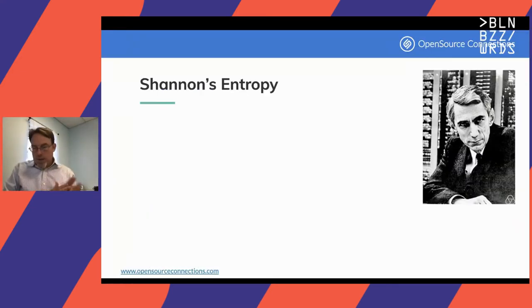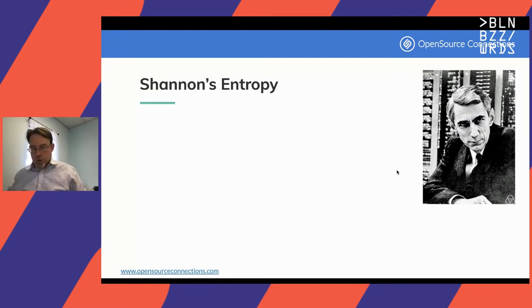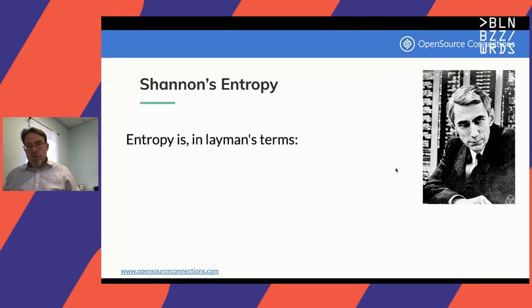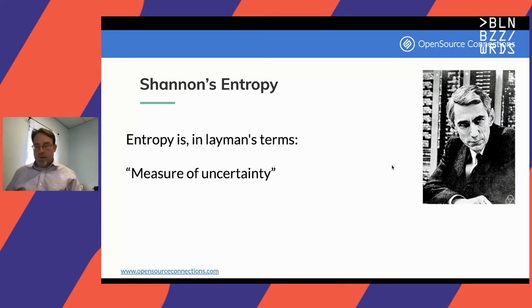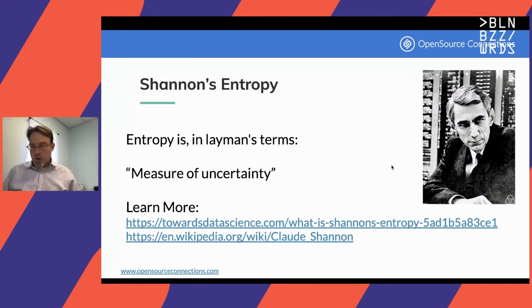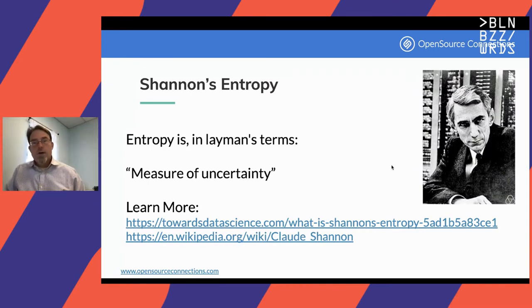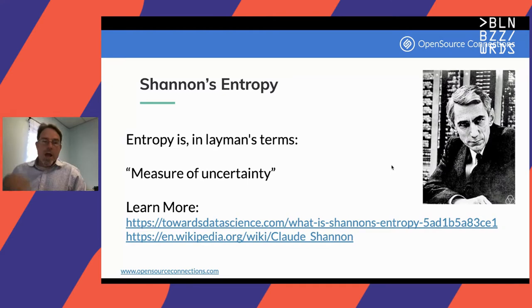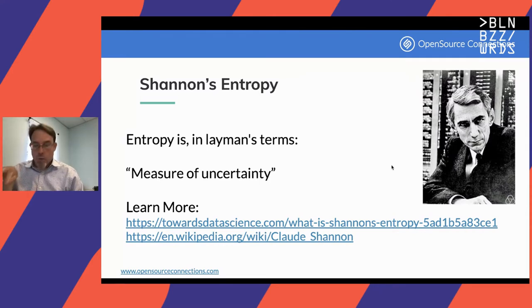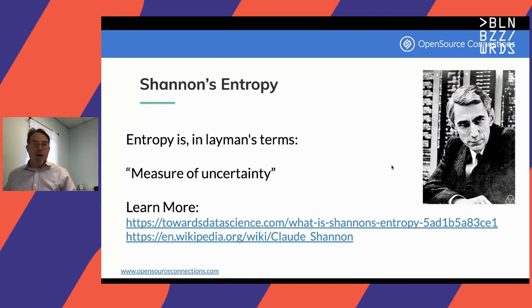Today I'm going to share one very practical approach I've been using to try and measure the diversity of search results. First off, I need to introduce the idea of entropy and how we're going to use it to understand diversity of search. In layman's terms, we describe entropy as a measure of uncertainty. More specifically, I'm going to show you a variant called Shannon's entropy, named after Claude Shannon, who is considered one of the founders of information theory.